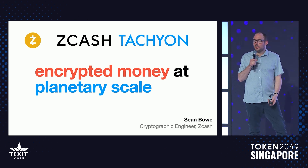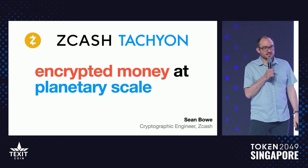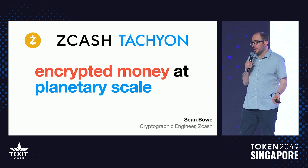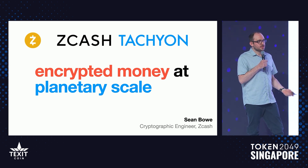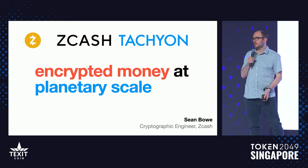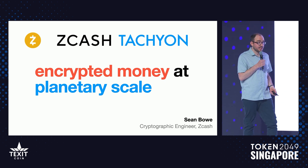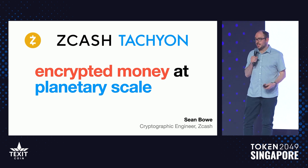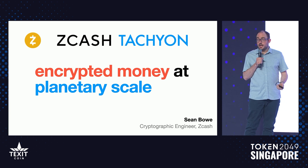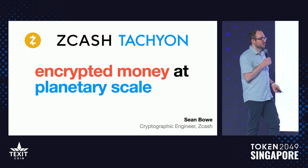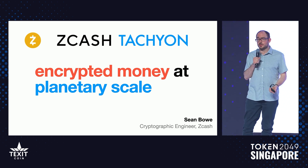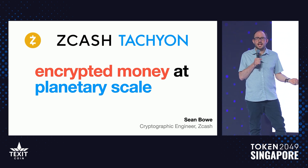Hello, everyone. My name is Sean Bowe. I'm a cryptographic engineer working on the Zcash project. Zcash is encrypted money. We launched Zcash about nine years ago as a fork of Bitcoin, and we incorporated really strong privacy guarantees and properties in our transactions through the use of zero-knowledge proofs and ZK-SNARKs. The researchers behind Zcash were the original inventors of the science behind ZK-SNARKs and zero-knowledge proofs, and we were the first team to deploy zero-knowledge proofs in production — not just in the blockchain world, but in any product ever.